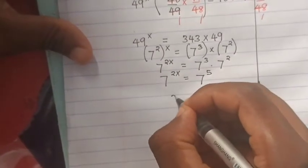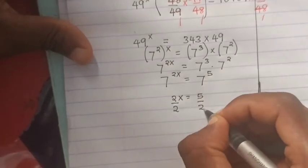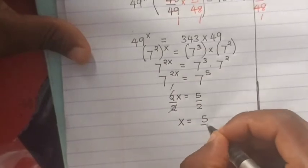Then 2x equals 5, divided by 2, so x equals 5 over 2.